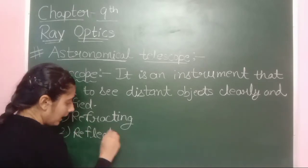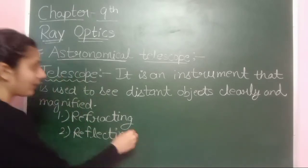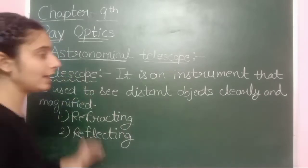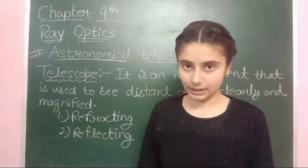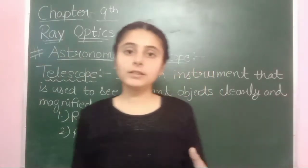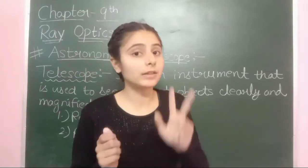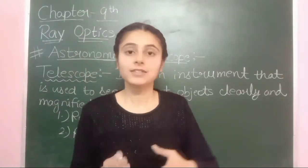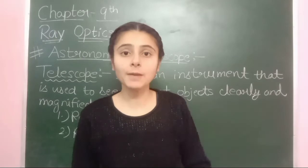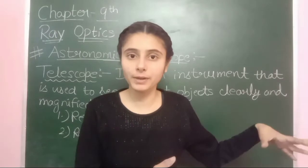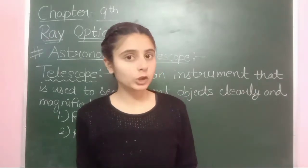There are two types of astronomical telescopes: refracting and reflecting. This telescope uses two lenses. As in the previous video on the compound microscope, there is an eyepiece and an objective.